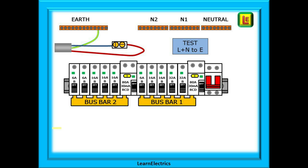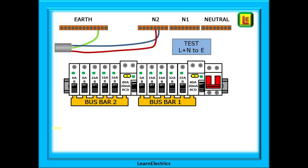This is one method of connecting line and neutral together: remove the line from the MCB, the neutral from the neutral bar and connect them together with a connector block. Your meter probe will make contact with the brass screw in the connector block and the other probe can go onto the earth bar. Another method of connecting line and neutral together removes the phase or line conductor from the MCB and places it into a spare hole on the appropriate neutral bar.